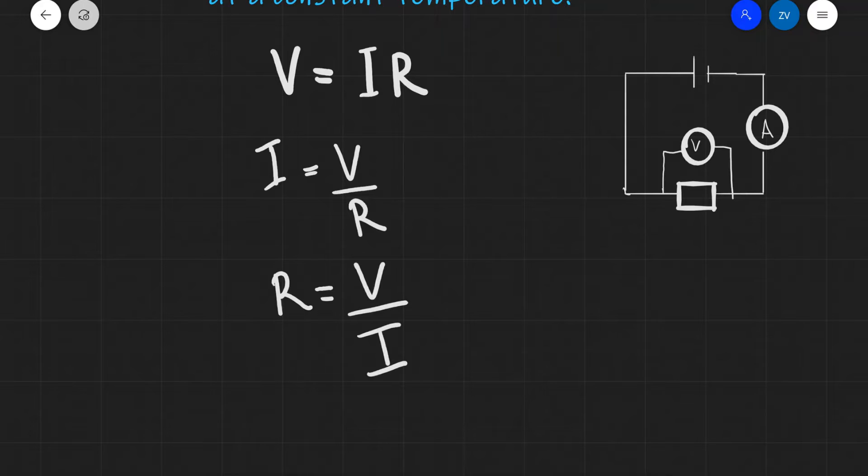The unit for resistance is known as the Ohm, and if you're interested in what the base unit for the Ohm is, please have a look at my other video on the Ohm and its base unit equivalent, which is in the description of this video.